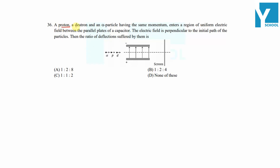A proton, a deuteron, and an alpha particle having the same momentum enter a region of uniform electric field between the parallel plates of a capacitor. The electric field is perpendicular to the initial path of the particles. The question asks for the ratio of deflection suffered by them.